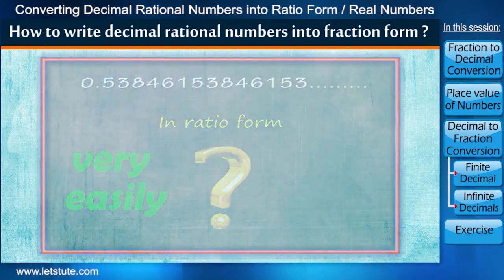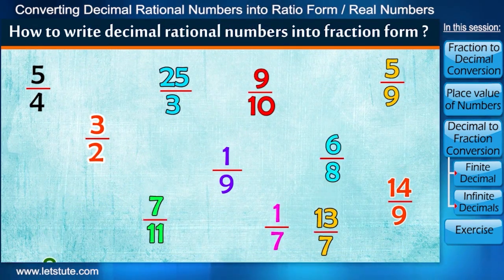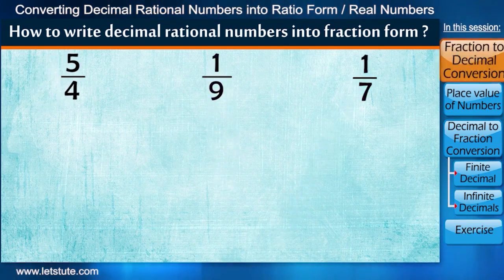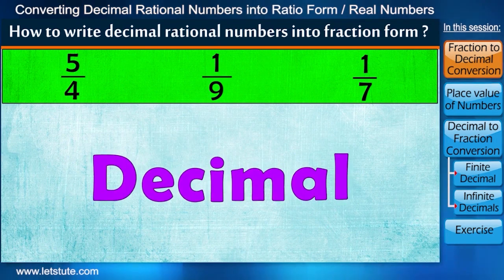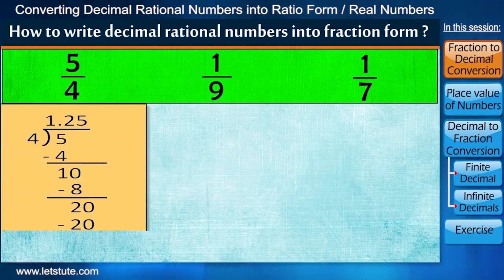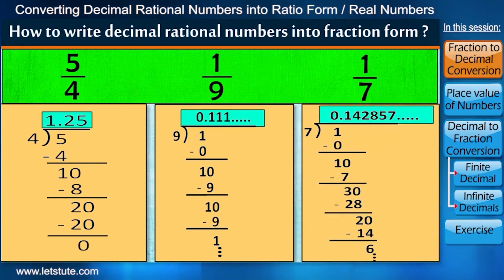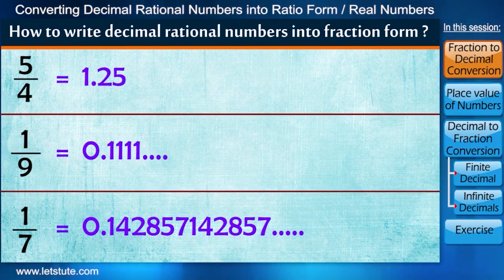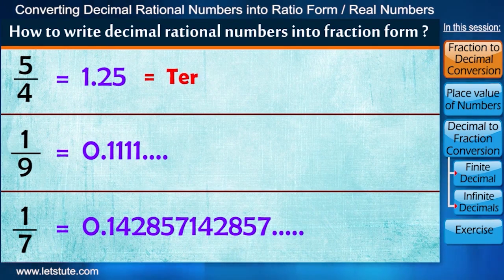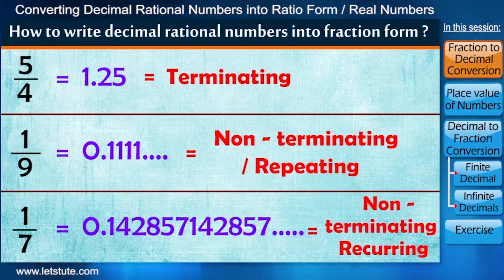You must be seeing some rational numbers on the screen. Let's pick any three of them. If I ask you to write these fractions in form of decimals, then you will simply divide numerator by denominator in each case and can get the decimal form. By writing these numbers in decimal form, we understand which fraction has terminating decimal form and which are non-terminating and have recurring digits.